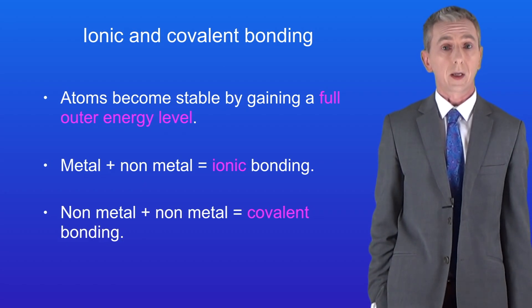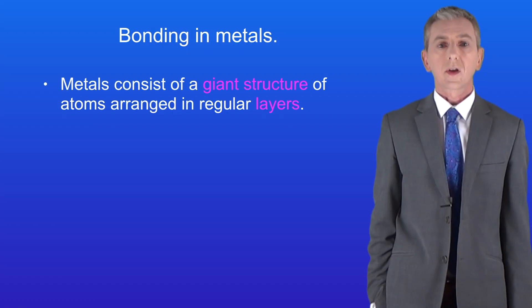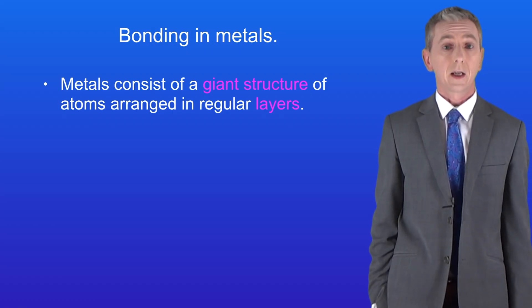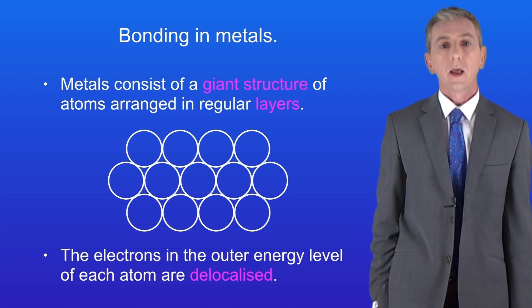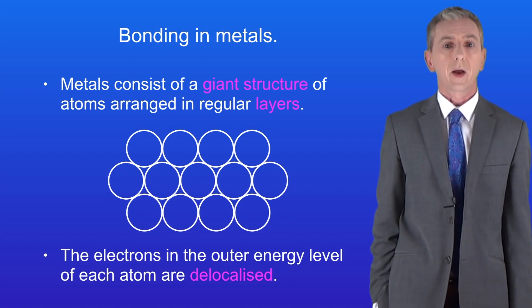So let's take a look at bonding in metals. Metals consist of a giant structure of atoms arranged in regular layers, and I'm showing you that here. In a metal the electrons in the outer energy level of each atom are delocalized, so let's take a look at what that means.